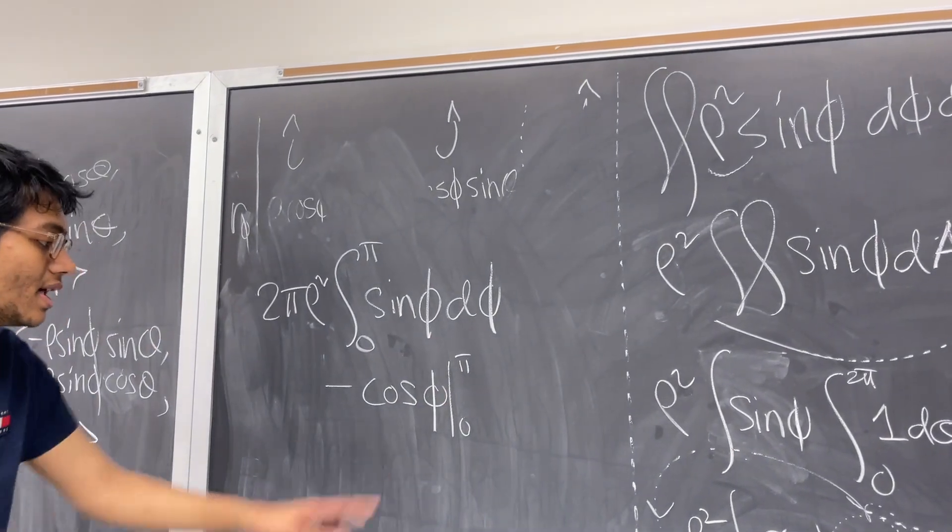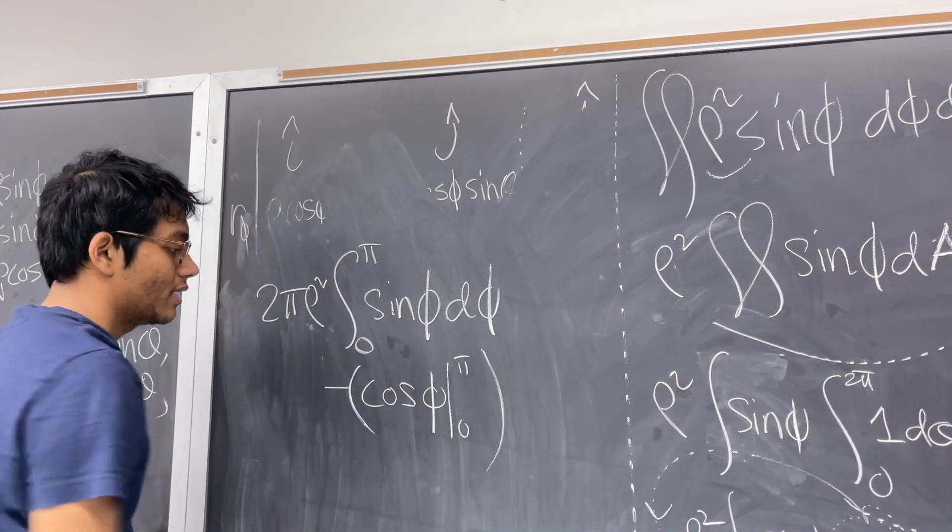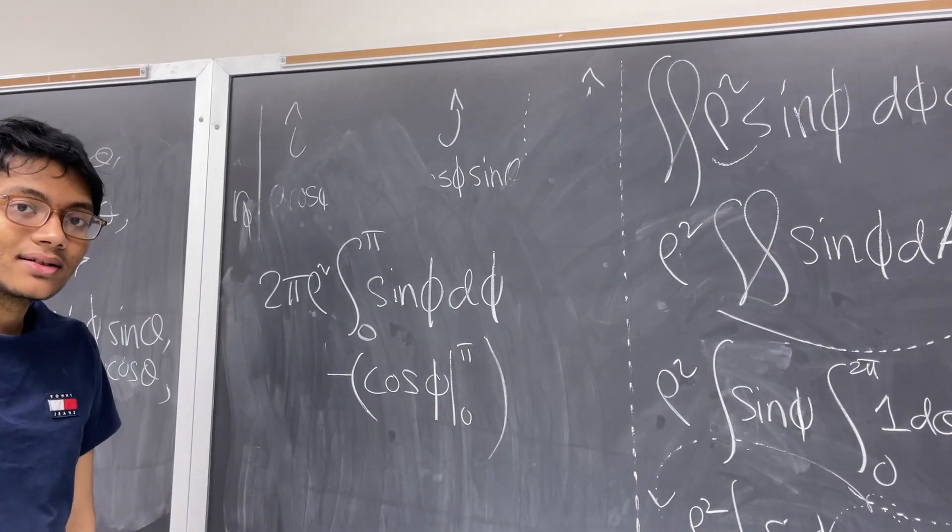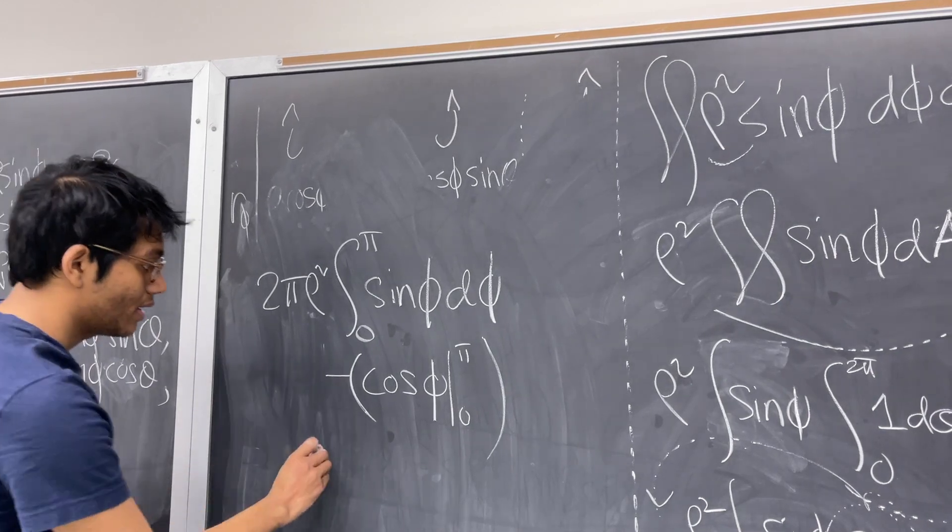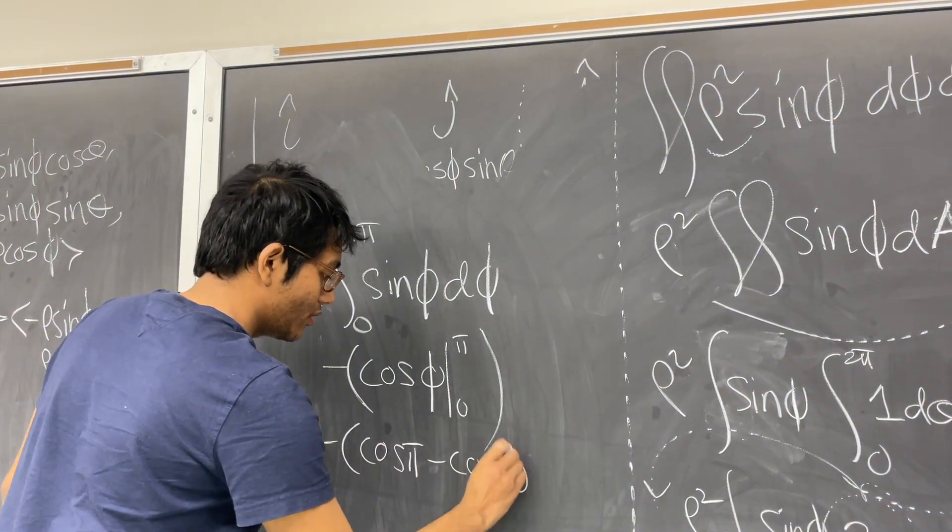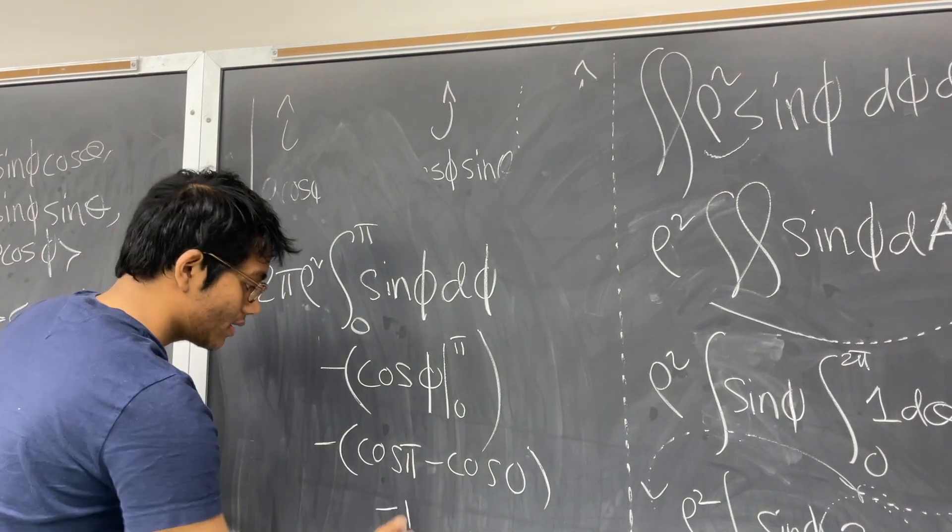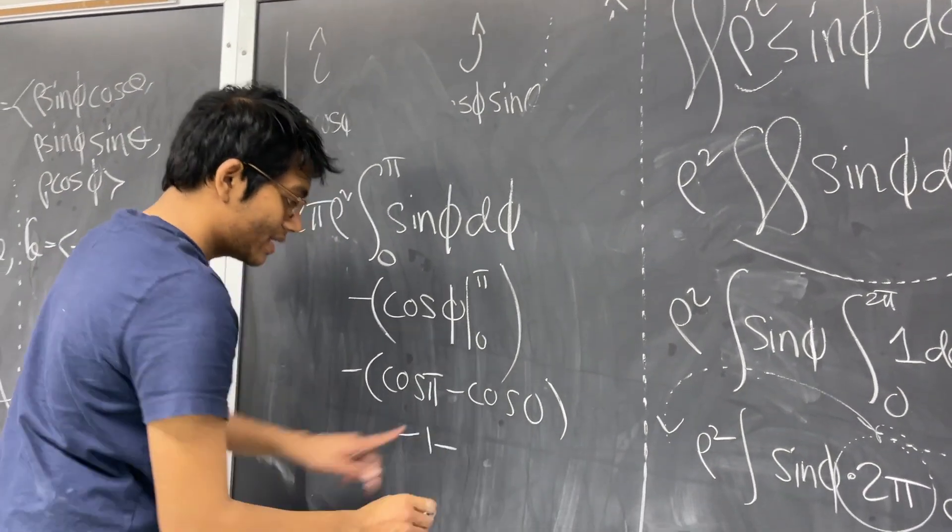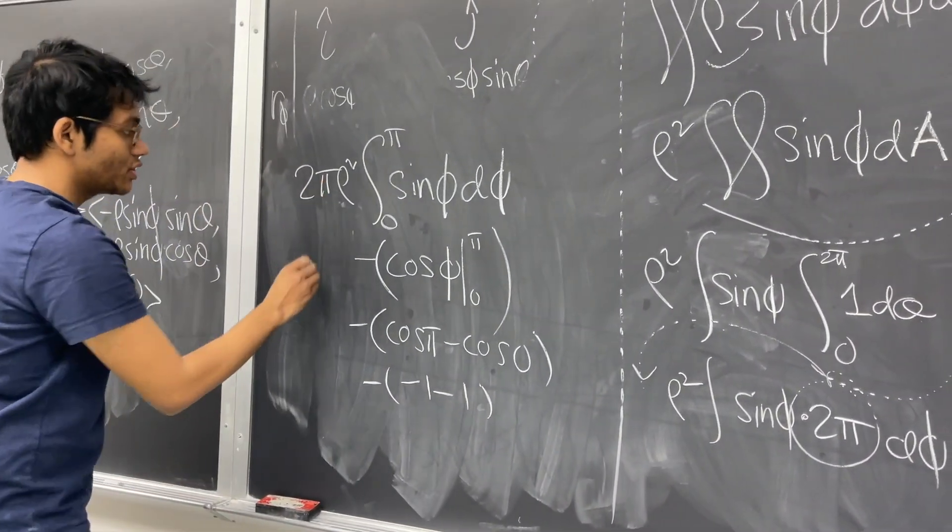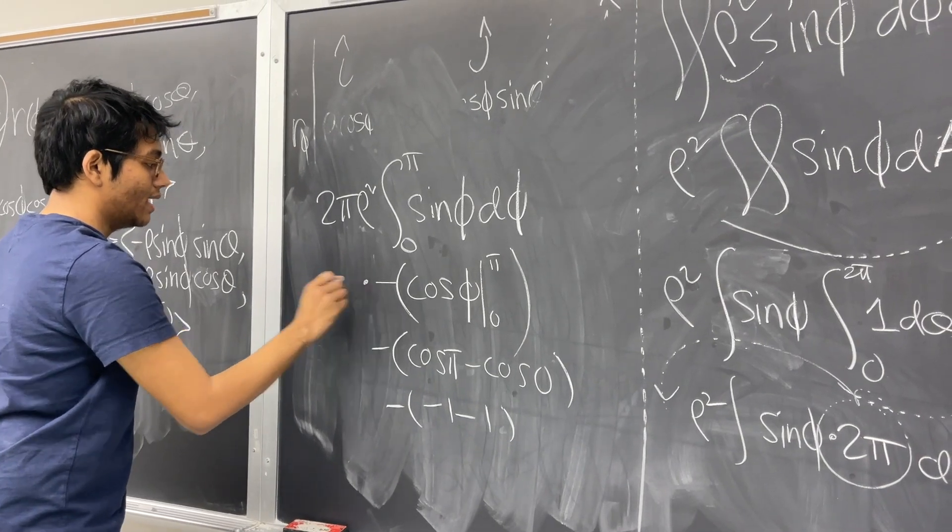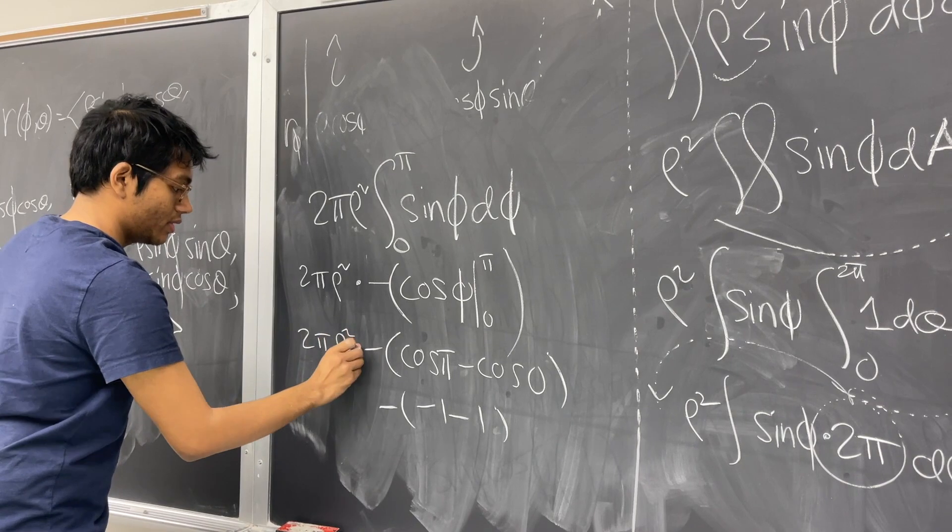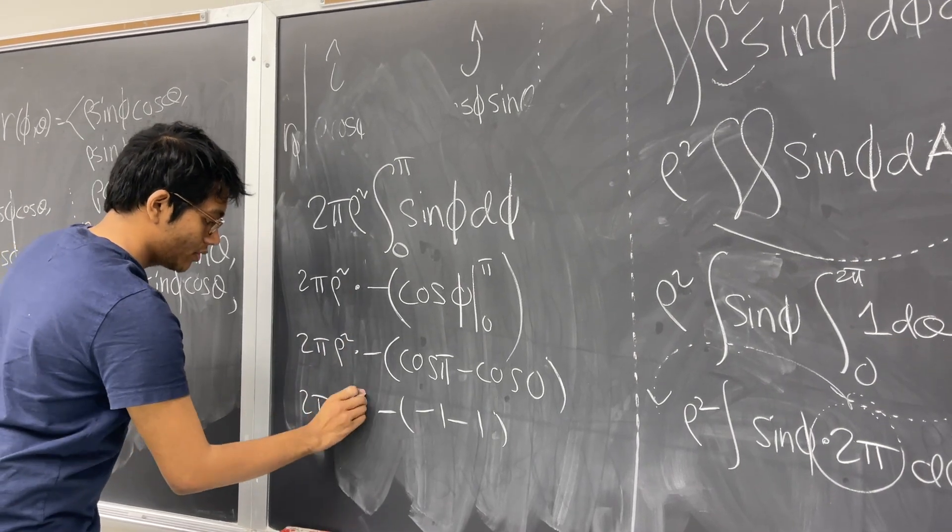What is that going to give us? Well, cosine of phi is minus 1, and cosine of 0 is 1. So I'm going to have inside here cosine of phi minus cosine of 0. This is negative 1. This is positive 1, but this negative makes it negative 1. And don't forget your 2 pi rho squared on the outside. So times 2 pi rho squared.